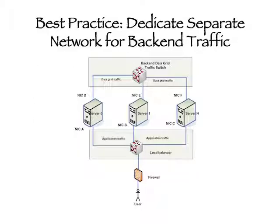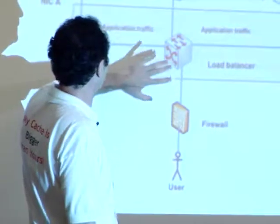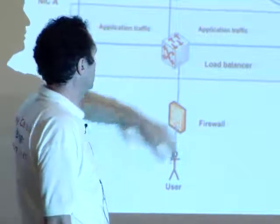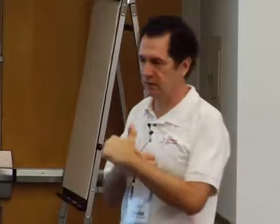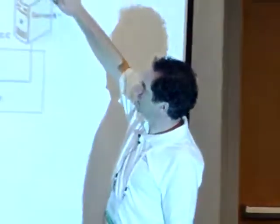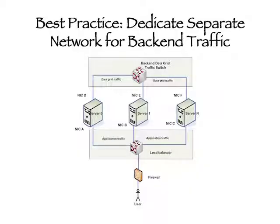Another best practice is infrastructure. When you use data grids and go distributed, you have application traffic from users through the firewall and load balancer, but you also have traffic serving the data grid — cache coherency traffic, partitioning, lock management, cluster management. This internal traffic has nothing to do with what your users want. The best practice is to route that traffic to the backend. Most modern servers come with two network connections — use one for application traffic and plug backend traffic into a separate switch. This benefits both channels since they don't compete for limited network bandwidth.